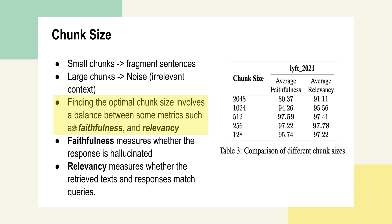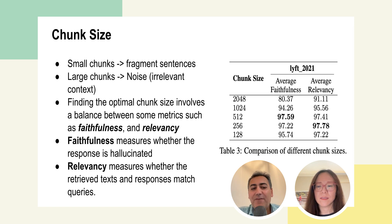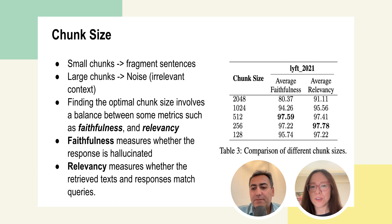Finding the optimal chunk size involves balancing different metrics. In this paper, they considered two: faithfulness and relevancy. Faithfulness measures whether the response is hallucinated or not, and relevancy measures whether the retrieved text and responses are relevant to the user query. They want both metrics to be high — it's similar to precision and recall in a sense. You can have a composite metric that factors in both sides, and they want to optimize both.